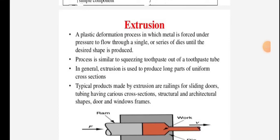Welcome back friends. We are studying the subject manufacturing process. In this subject, we are studying the forming process, metal forming process. In this, we are seeing the subtopic extrusion. A plastic deformation process in which metal is forced under pressure to flow through a single or series of dies until the desired shape is produced.